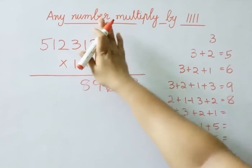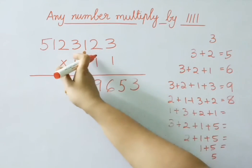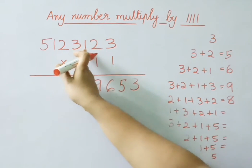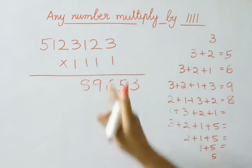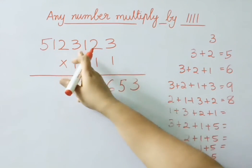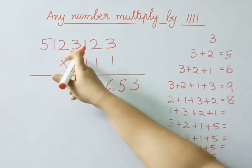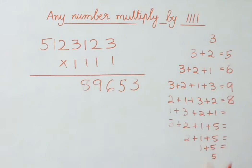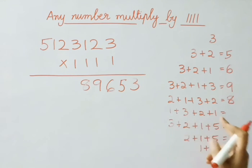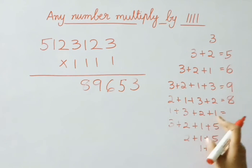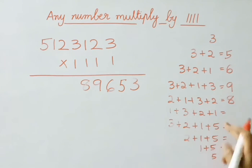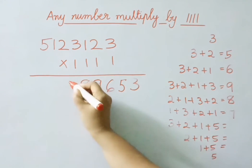Now leave these 2 digits, then add 4 digits: 1 plus 3 is 4, 4 plus 2 is 6, 6 plus 1 is 7. Write the answer: 7.